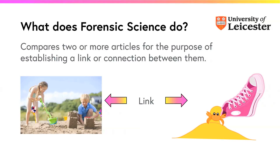So that's what we're doing with forensic science — we're looking at something we might find on an individual, maybe your shoe with sand in it, and then linking it to another place or individual, like the beach with a lot more sand in it, to associate you recently with having been on the beach.